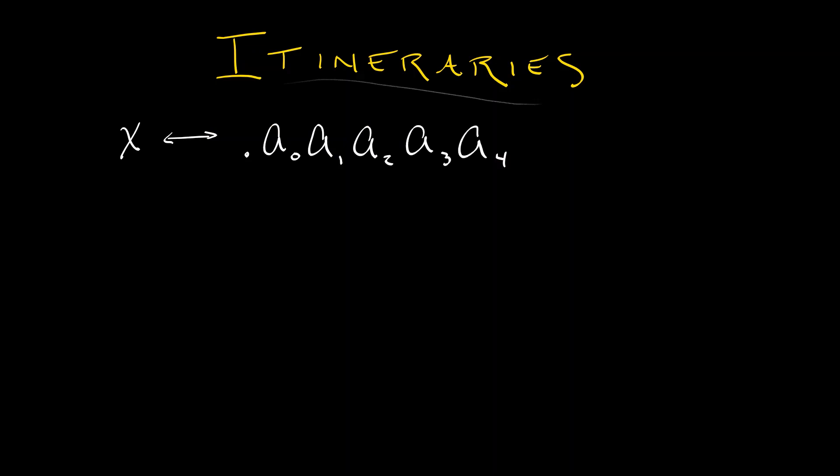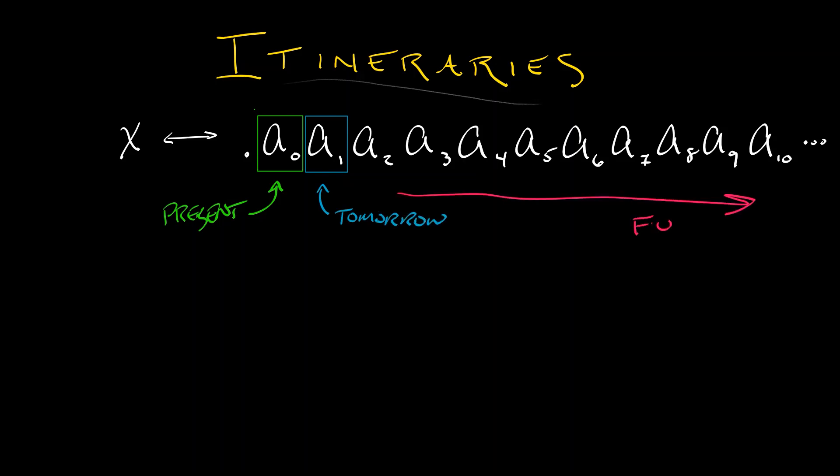That first digit encodes the present. The next digit encodes where you're going to be tomorrow. And then as you keep going, these digits are telling you more and more about your future later in time, where everything depends on which half of the interval you are in, either the left, 0, or the right, 1.